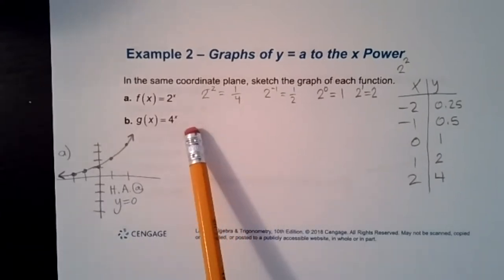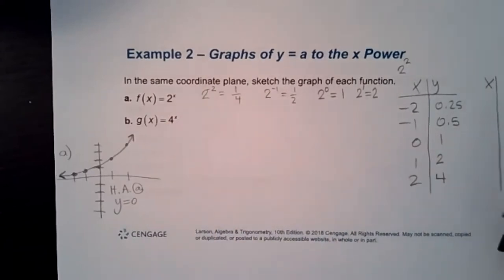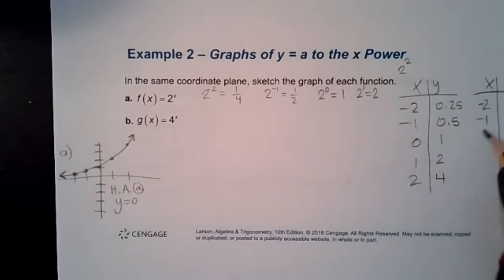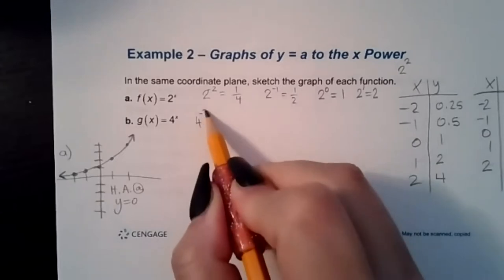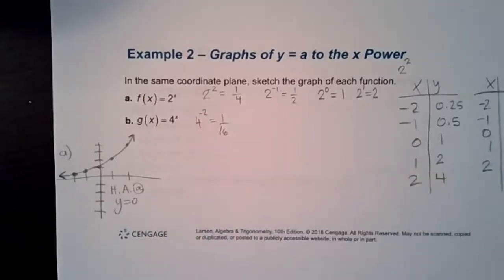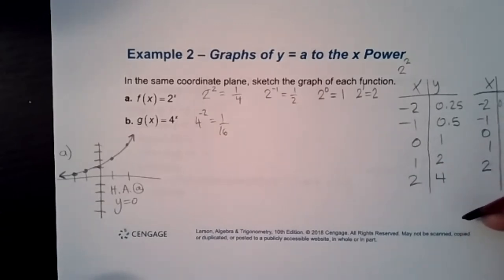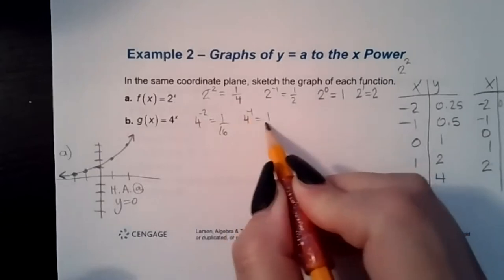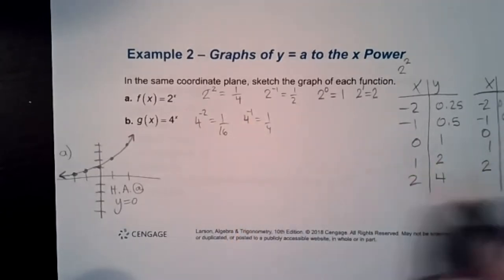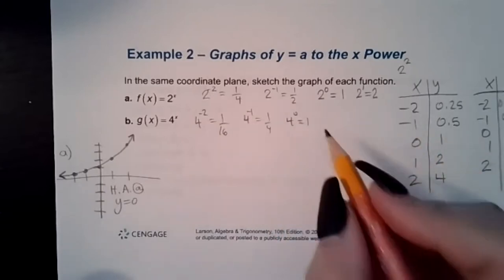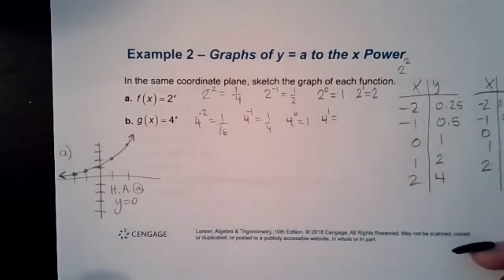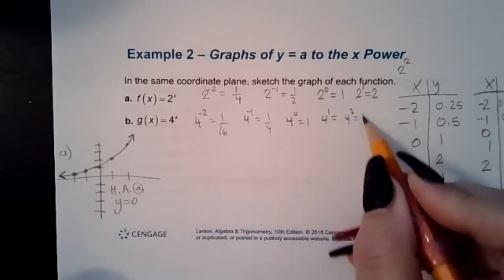For part (b), f(x) = 4^x, same x-values but different outputs: 4^(−2) = 1/16 = 0.0625, 4^(−1) = 1/4 = 0.25, 4^0 = 1, 4^1 = 4, 4^2 = 16. This graph still has the same shape but is much more steep — the bigger the base, the steeper the curve.